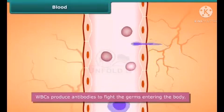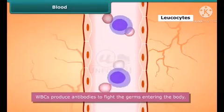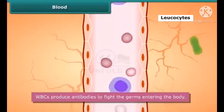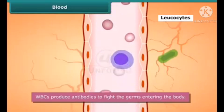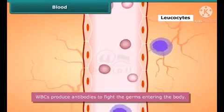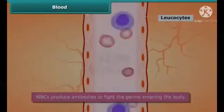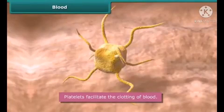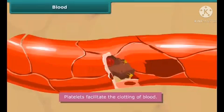WBCs are also known as leukocytes. They come in many different shapes. They produce antibodies to fight the germs entering the body. Platelets are also known as thrombocytes. They are oval in shape and they facilitate the clotting of blood.